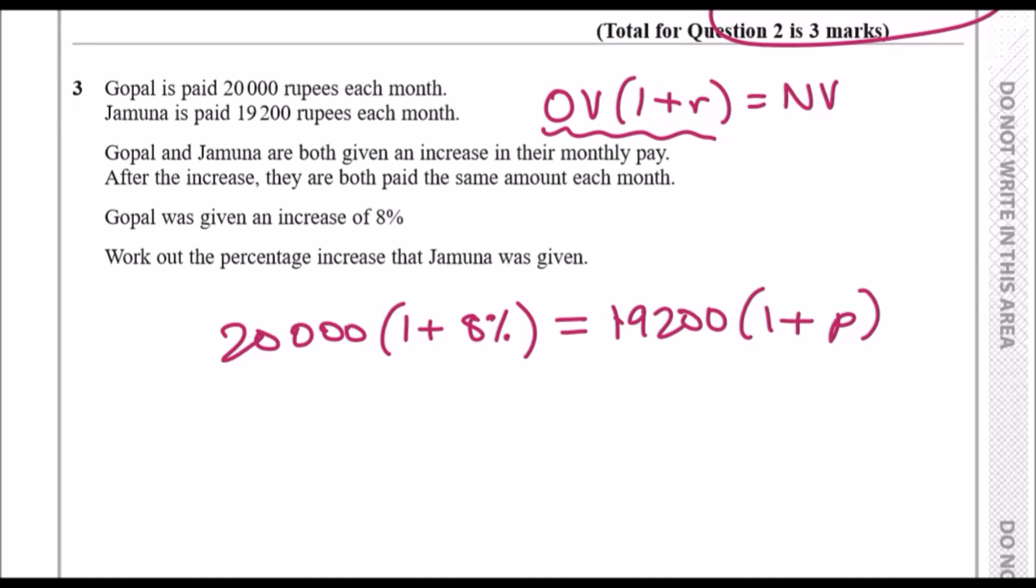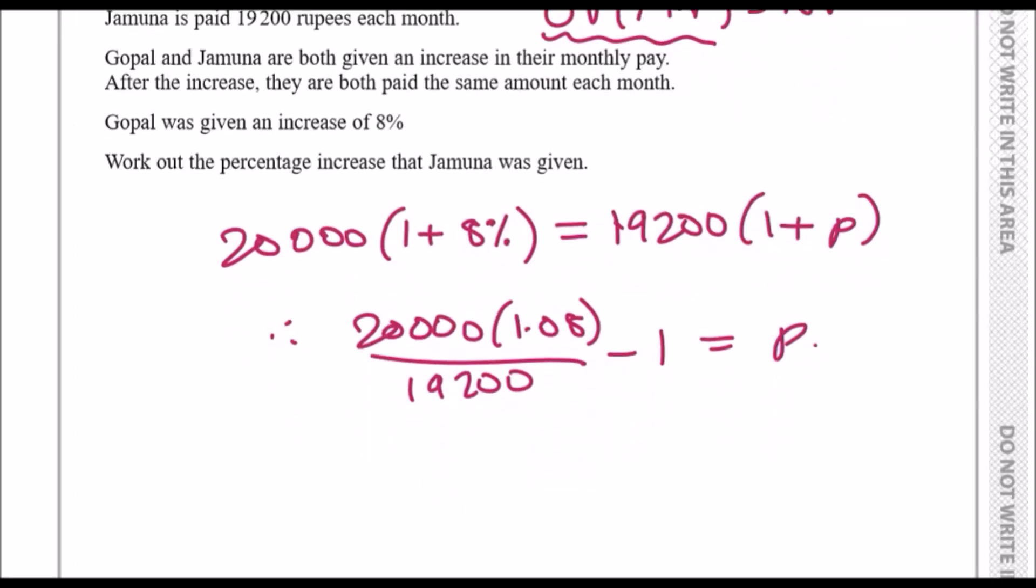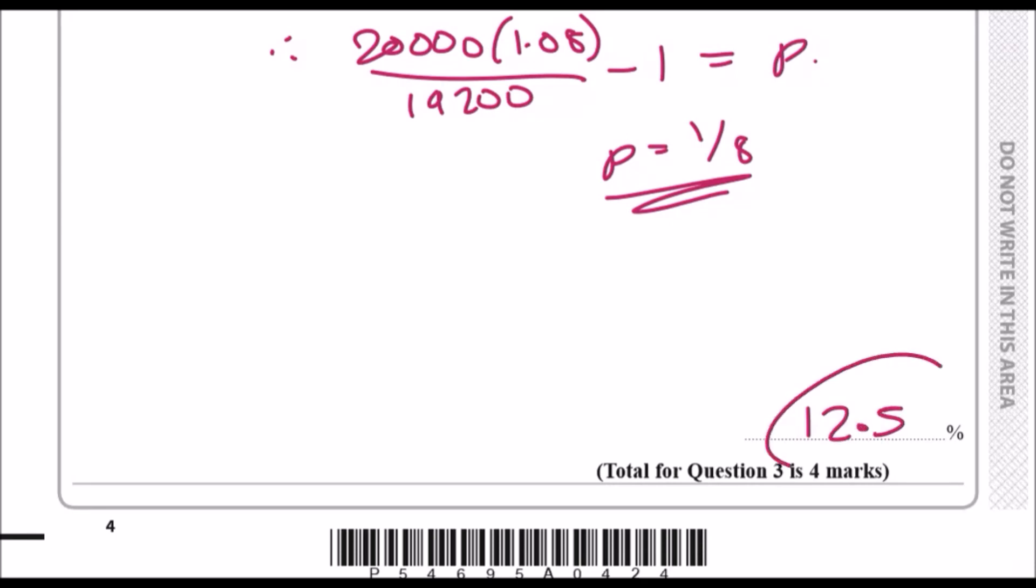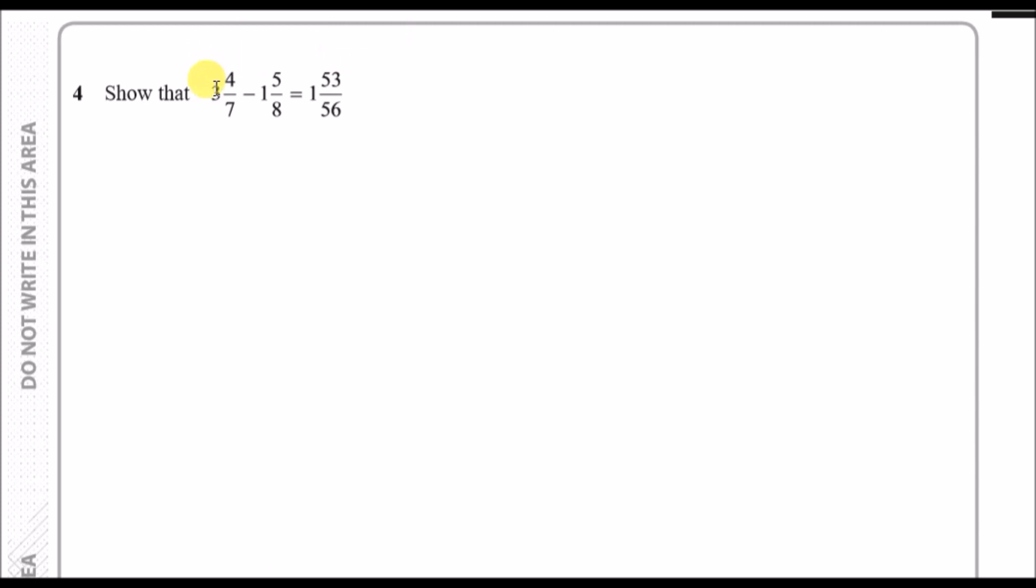Jamuna earned 19,200 and this was an increase of p, so we can work out the percentage. Just rearrange this equation and make p the subject. Divide 19,200 across, so we're gonna have 20,000 times 1.08 over 19,200 equals 1 plus p. Subtract 1 across, so all of this minus 1 equals p. Put this in the calculator: 20,000 times 1.08 over 19,200, all of that minus 1 gives us 1 over 8. So p is 1 over 8. To change to percentage, just times by 100, and you should get 12.5 percent.